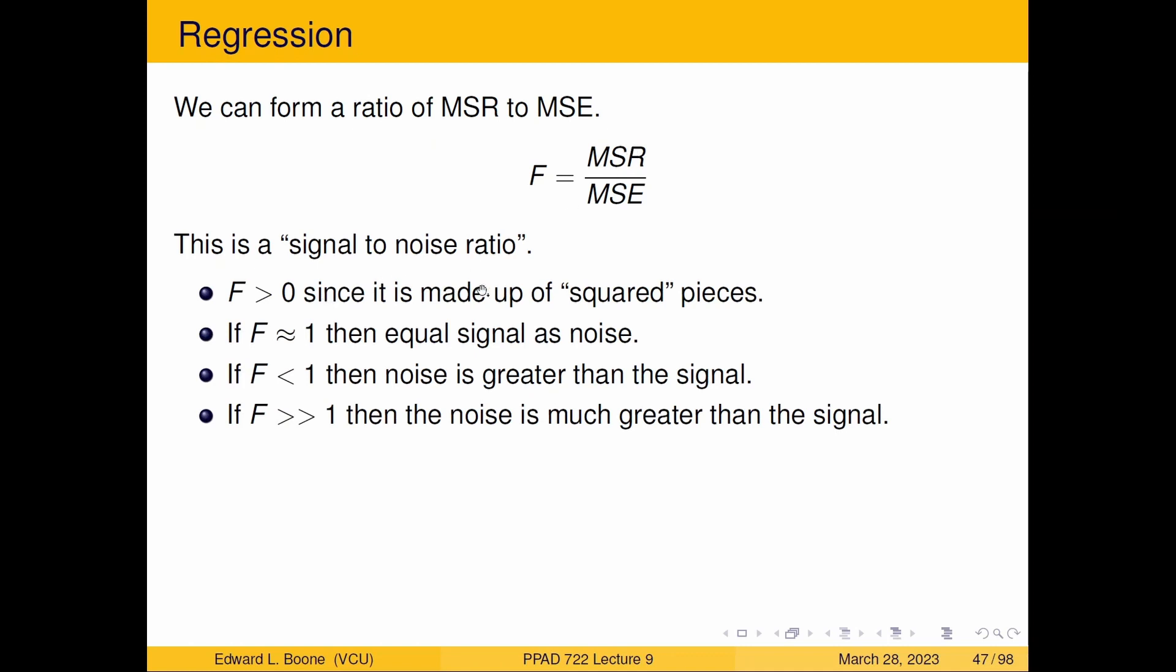So remember, it's made of square pieces. So F is always greater than zero. F near one means you have equal signal as noise. So probably not a very strong pattern in that case. If it's less than one, then the noise is greater than the signal, which means that there's not a very strong signal, which means the regression doesn't do that good of a job.